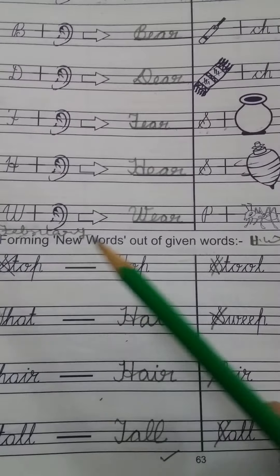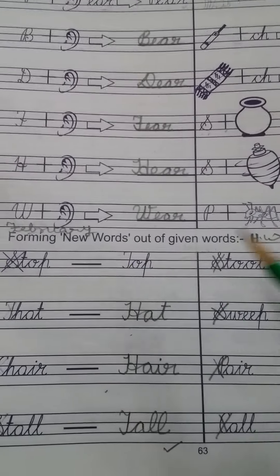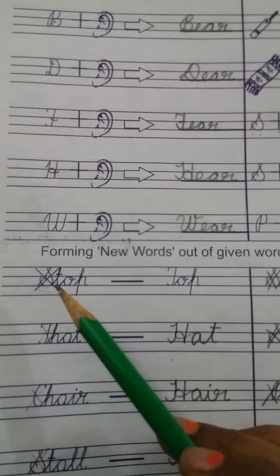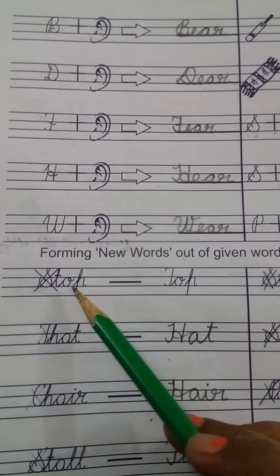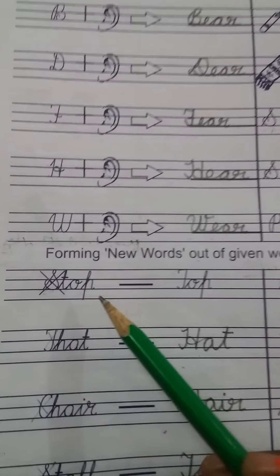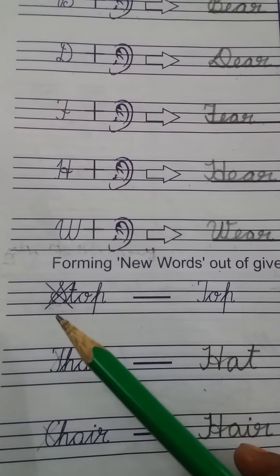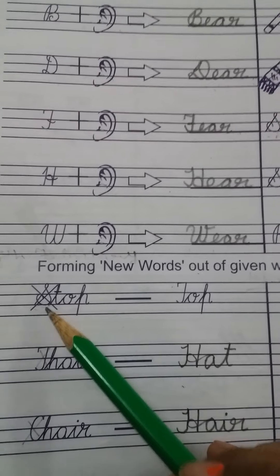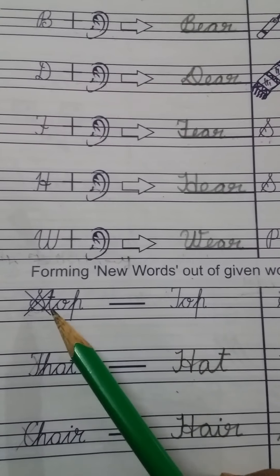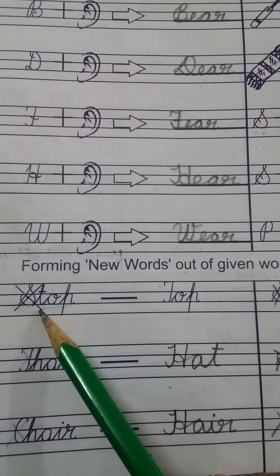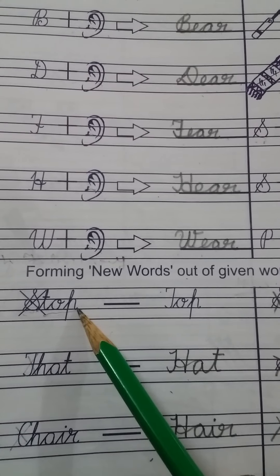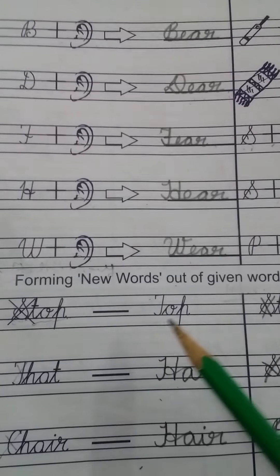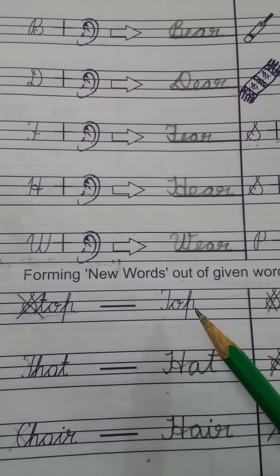Next: forming new words out of given words. Look here. S-T-O-P, stop. We have cut S. This is a new word: T-O-P, top. So we have written T-O-P, top.